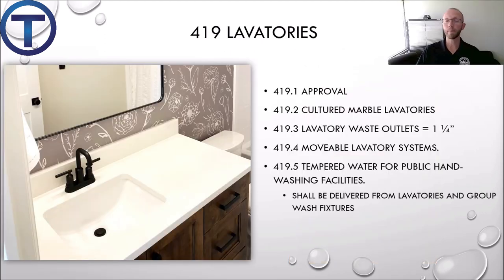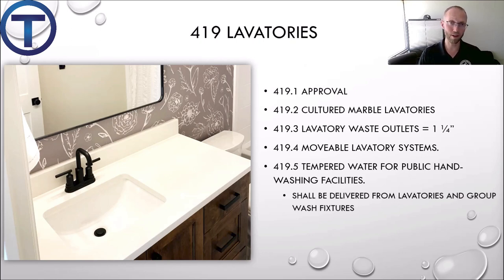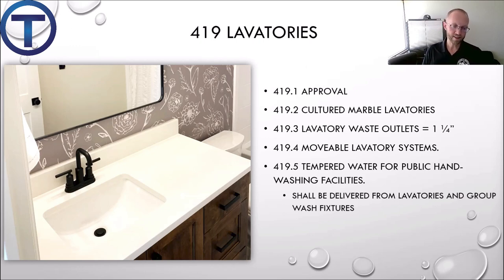4.19 gives information about lavatories — a lavatory is a fancy word for a bathroom sink. 4.19.1 gives the approvals for those fixtures. 4.19.2 talks about cultured marble lavatories — those sink-slash-countertops poured into one cultured marble piece. 4.19.3 states that lavatory drains have to have at least a one and a quarter inch outlet — that's the smallest acceptable. Most of the time we're dealing with one and a half inch traps, but pop-up assemblies have one and a quarter inch drains. It also mentions that a strainer, pop-up stopper, crossbar, or other device shall be provided to restrict the clear opening of the waste outlet.